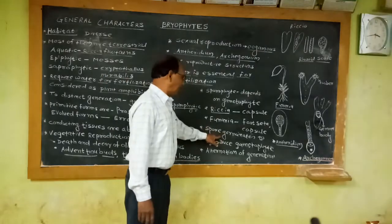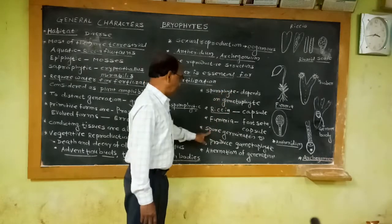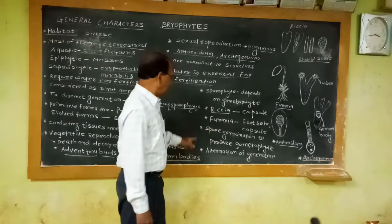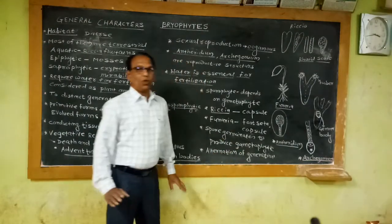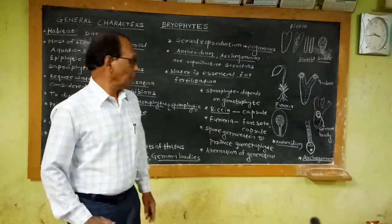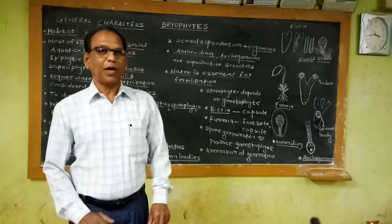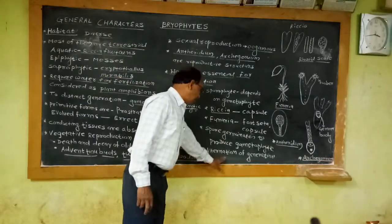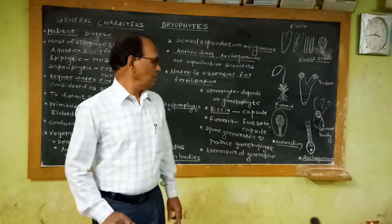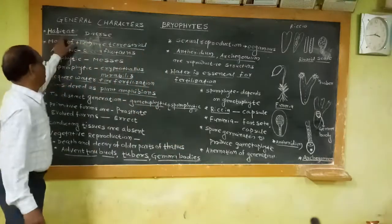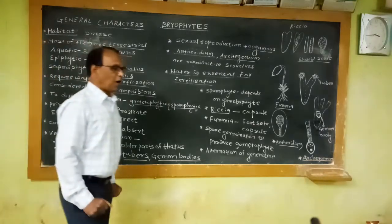After spores are produced, they are liberated from the sporophyte. After dispersal of spores, when spores get suitable conditions for germination, they germinate and give rise to the gametophyte. That means in the single life cycle of bryophytes, the gametophytic phase alternates with the sporophytic phase — each and every bryophyte shows alternation of generations in the single life cycle. That is all about the general account, introduction, and general characters of bryophytes.